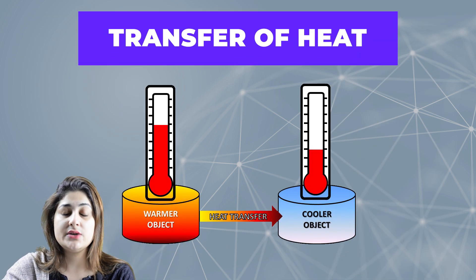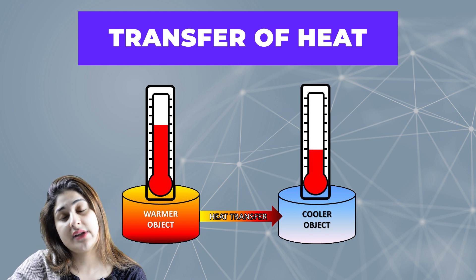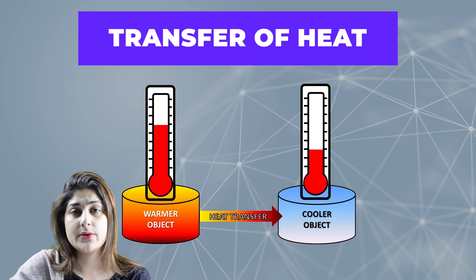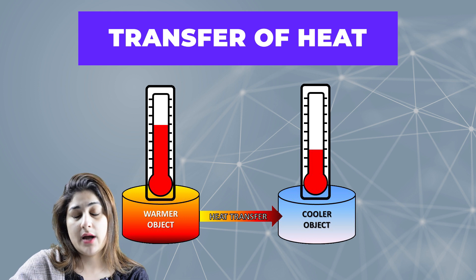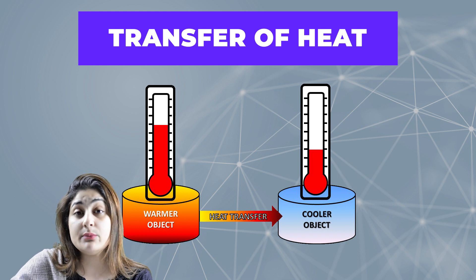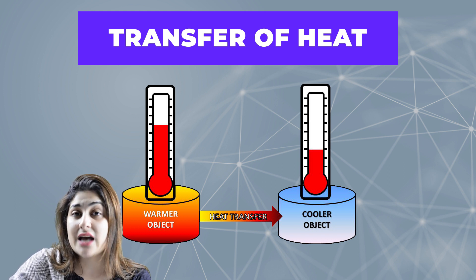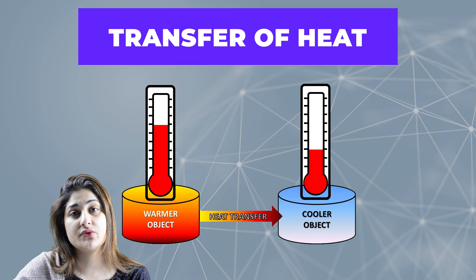Let's move to the next slide and see what is the basic reason behind changes in the states of matter. It is basically because of the transfer of heat. Heat travels from one side to the other. For instance, if you have a cup of hot water and place it in a room, the temperature of the glass decreases because the surrounding has less heat, which causes the heat from the glass to travel to its surroundings.